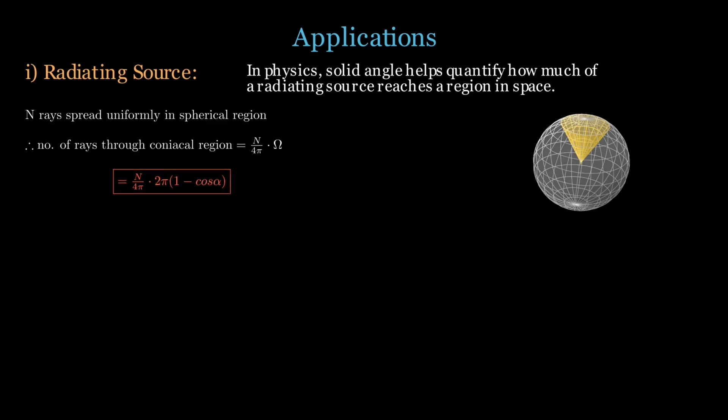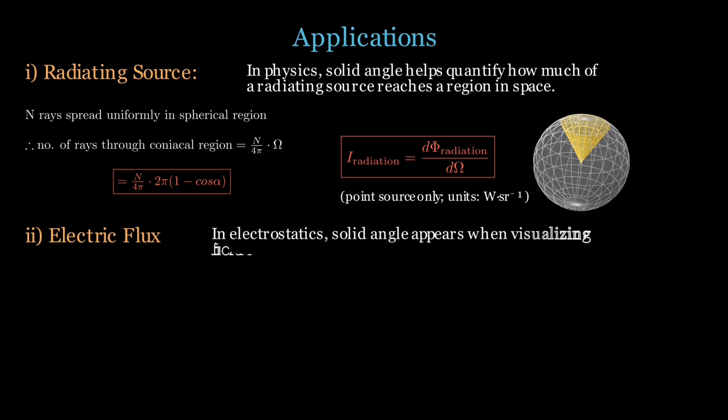This concept also leads us to define the intensity of radiation, which is power per unit solid angle. The SI unit is watts per steridian and this formula applies strictly to point sources. Solid angle also appears in electrostatics, particularly in visualizing electric flux.